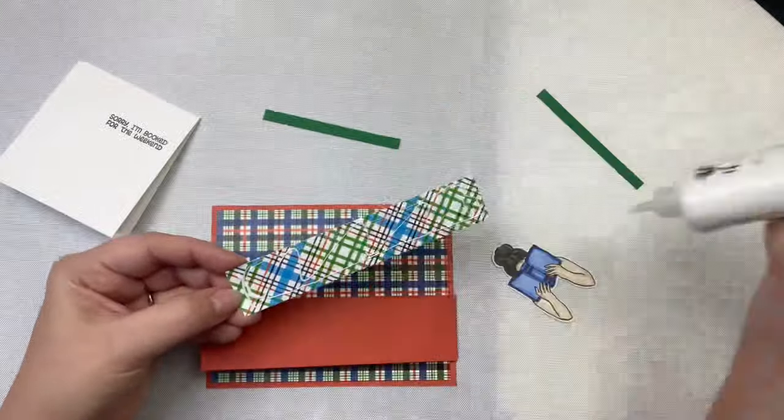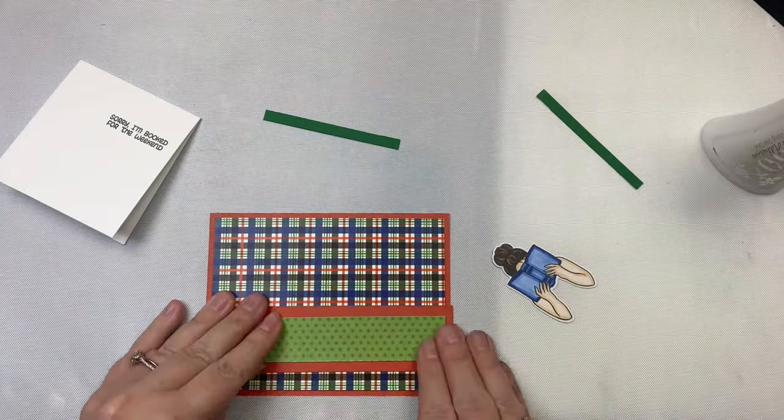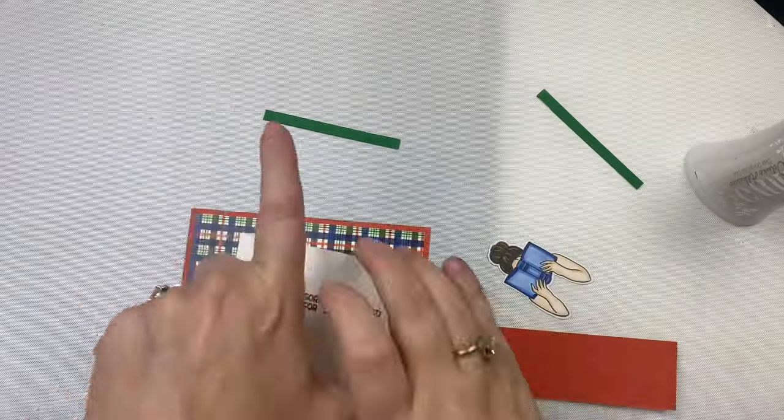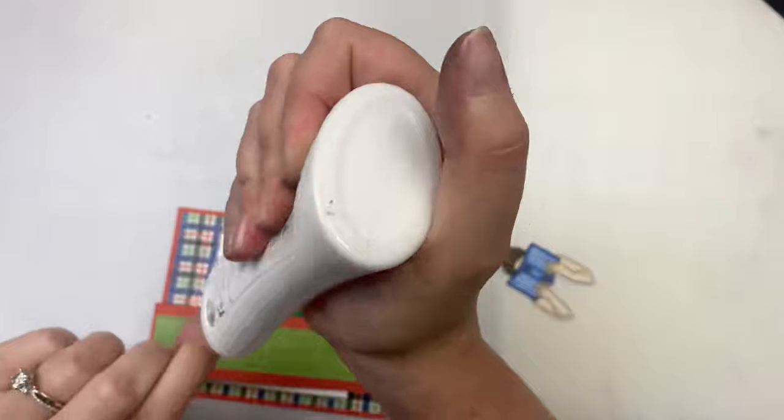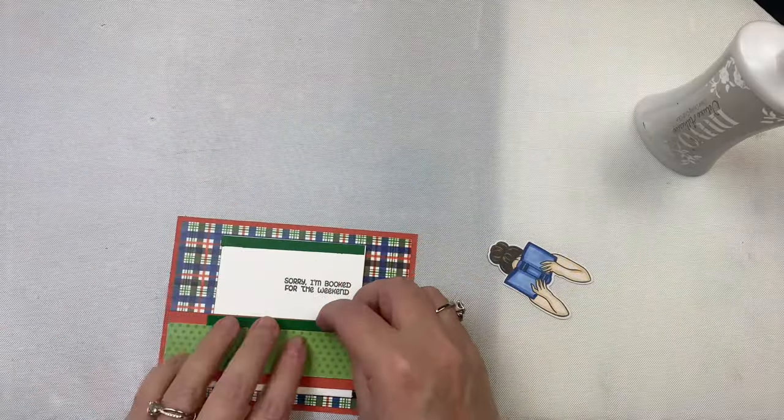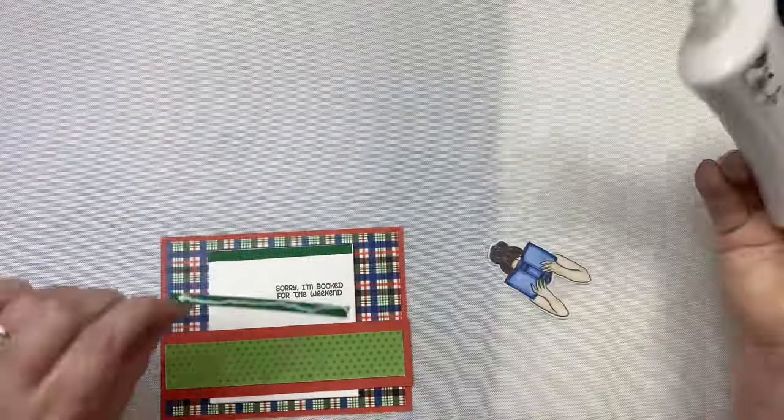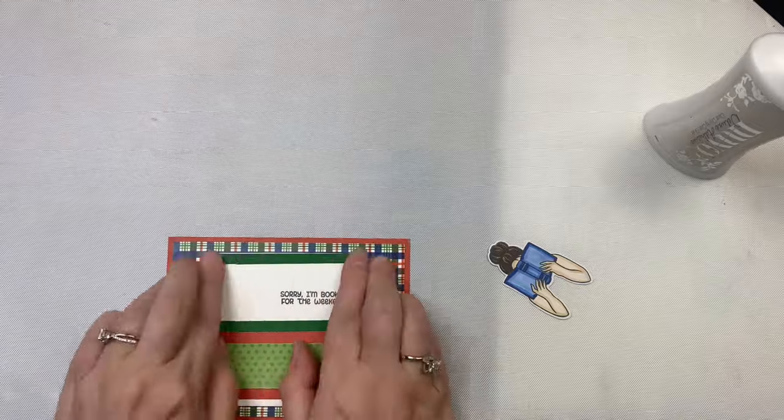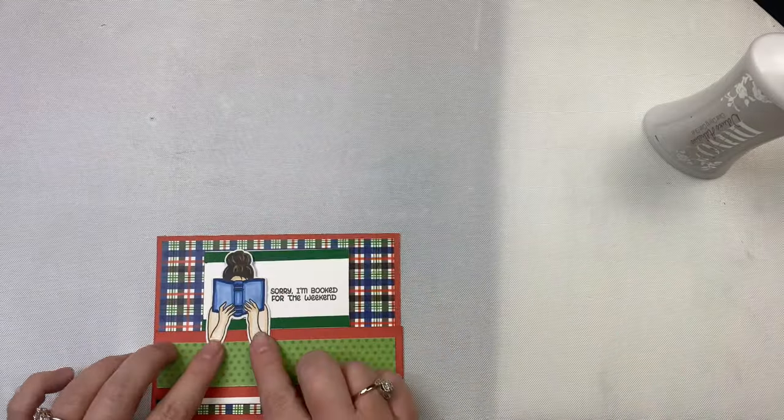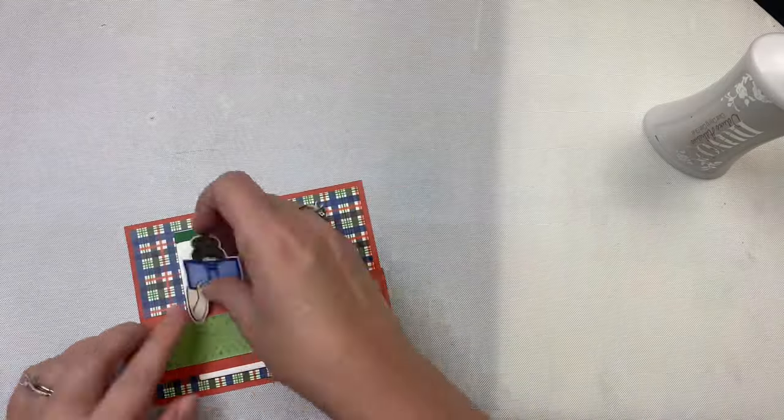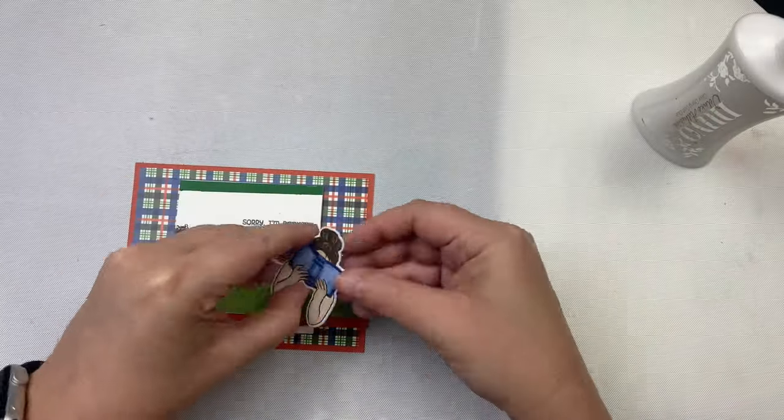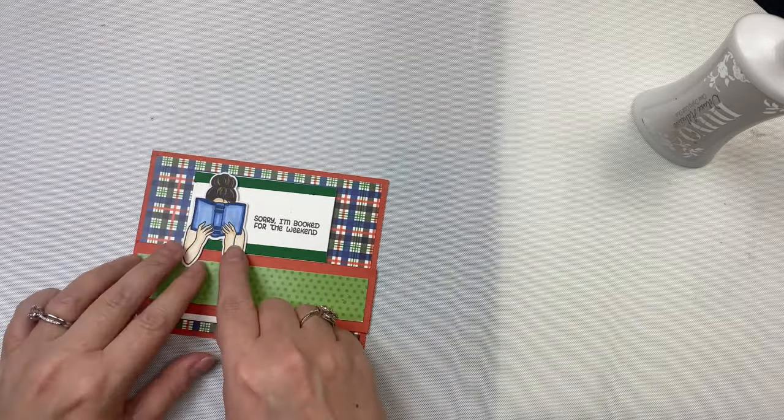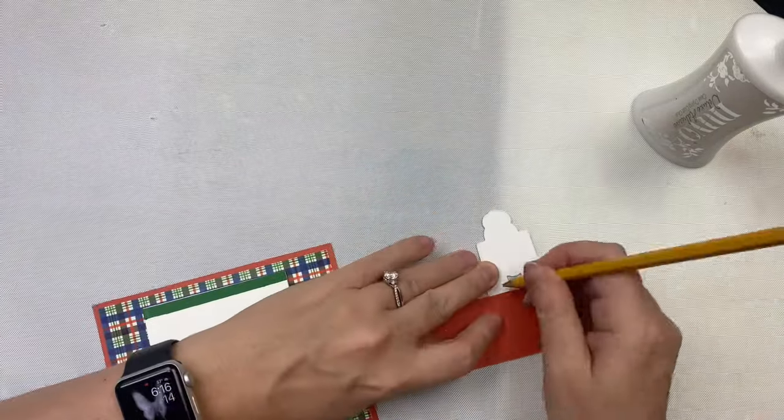For the image on the front, I used the girl holding the book and I'm going to have her elbows hanging over the flap. I decided to stamp the sentiment 'sorry I'm booked for the weekend' directly onto the small card base over on the right. I glued my pieces down, and I almost forgot to tuck the flap behind the pattern paper piece, but luckily I caught it in time. I glued on the card base and the other pieces, and I only added glue to the girl's elbows so that she would be attached to the flap.